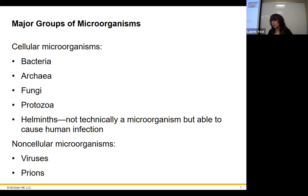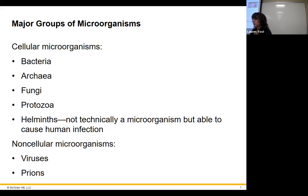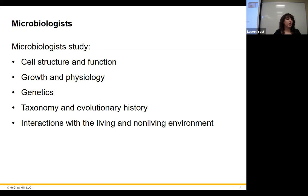Prions are infectious protein particles — just misfolded proteins. They didn't fold correctly, so they can't do their job. Because the water-interacting and water-fearing molecules aren't where they should be, they tend to aggregate together forming plaques, typically in the brain. This creates spongiform encephalopathies — holes developing in the brain like a sponge. Bovine spongiform encephalopathy is mad cow disease. That's prions.